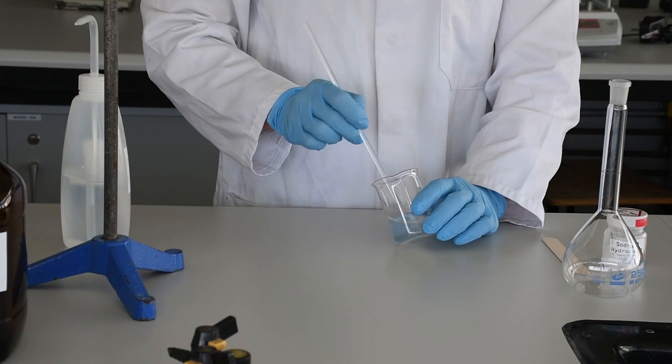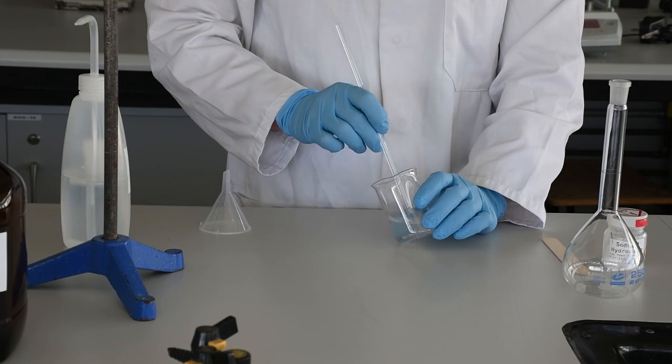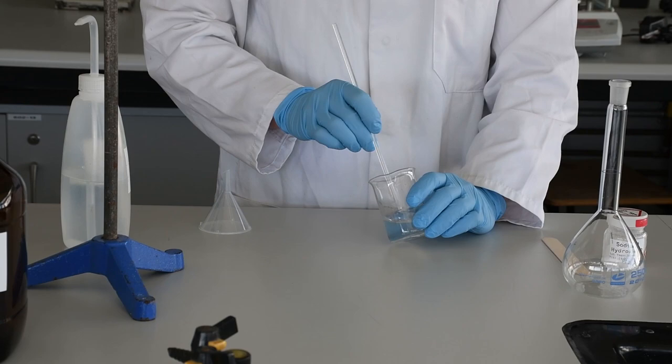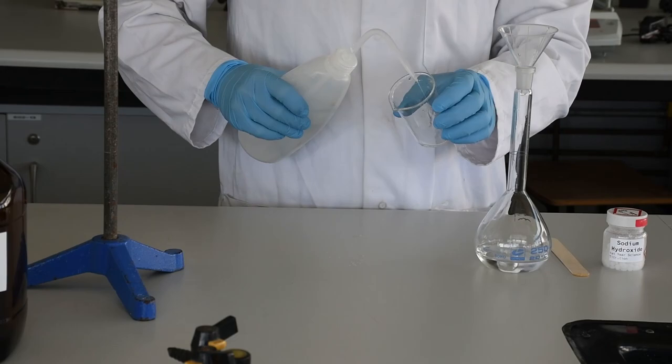When it does, we're going to take our funnel and use that to transfer the liquid into the volumetric flask. Since we're making up an unknown concentration, it doesn't really matter whether we transfer everything, but it's good practice to quantitatively transfer it. We wash off the glass rod and then very carefully wash out the beaker three to four times to make sure all of the material has been transferred across.